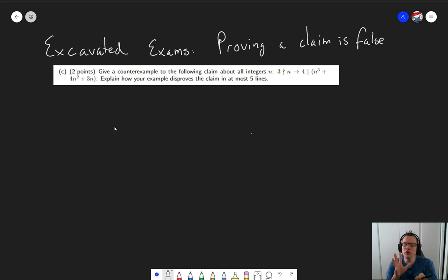So the reason I want to take a look at this one is that I often find when grading these exams that the second part of the answer, which is what is requested here, explain how your example disproves this claim in at most five lines, is often a bit lacking.